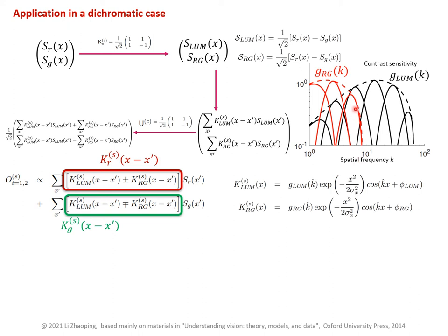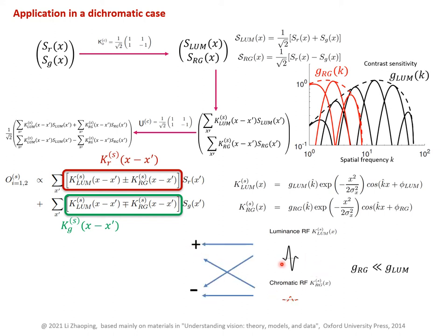Now let's look at the other extreme where the luminance channel has a higher gain than the chromatic channel. The luminance gain is stronger than the chromatic gain, so the luminance filter has a bigger amplitude, and because this is higher frequency the receptive fields are smaller in spatial extent. Starting again with one-dimensional space for illustration: taking the summation and difference, the luminance filter will dominate in both. Therefore, the red filter and the green filter both resemble this dominant contributor, and such a cell will be insensitive to the difference between red and green — not very sensitive to colour. For instance, it could be a small receptive field tuned to a particular orientation but not sensitive to colour.